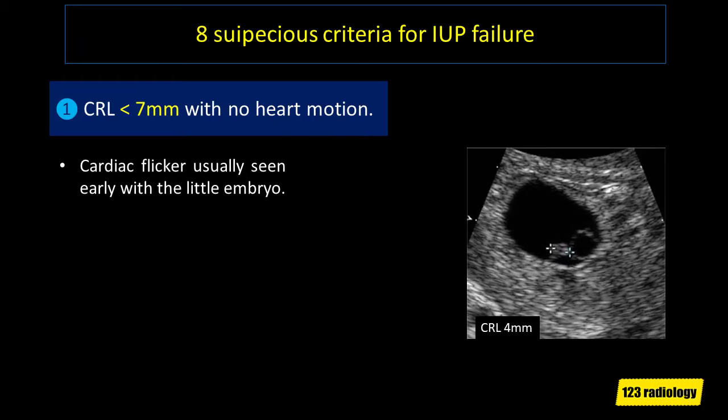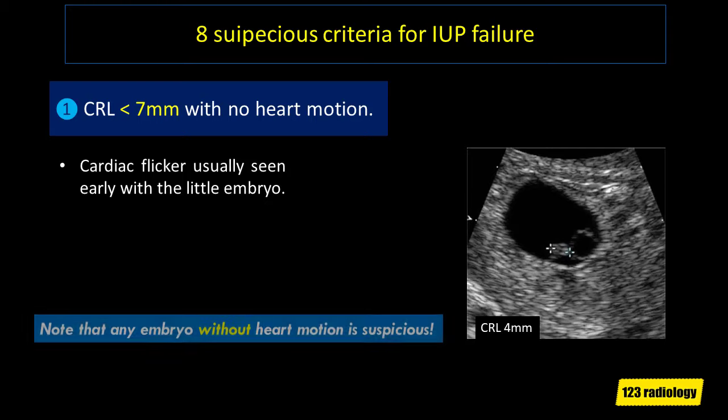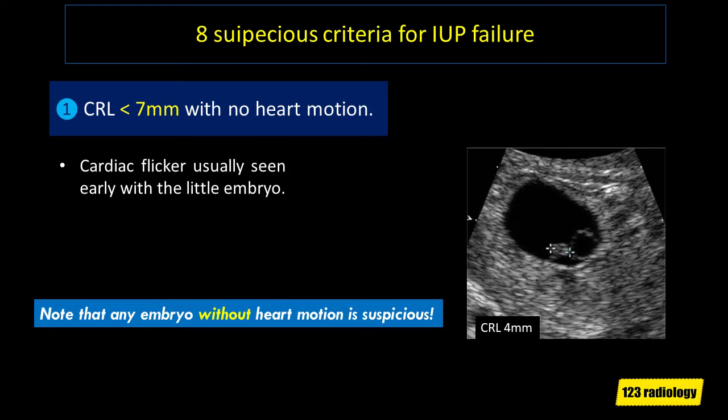The first suspicious criterion is a crown rump length less than 7 mm with no heart motion. You should never see an embryo without heart motion, as heart motion starts early even before you can definitively see the embryo. If you see an embryo without heart motion, that is suspicious for pregnancy failure. As you can see on the image, the crown rump length is 4 mm with no visible cardiac pulsations — this is suspicious for pregnancy failure and follow-up ultrasound study is highly recommended. Note that any embryo without heart motion is suspicious.